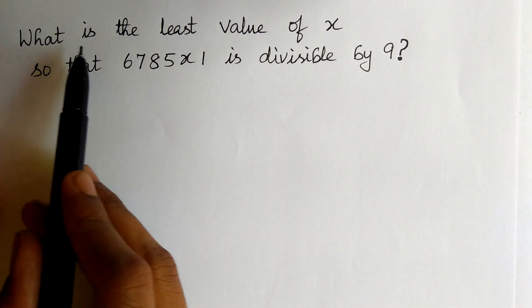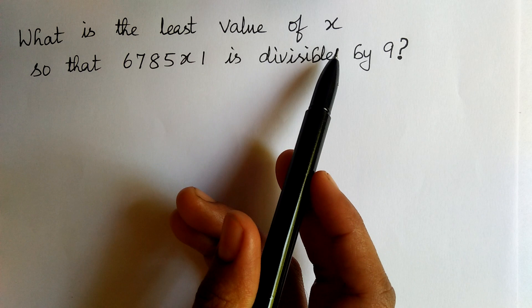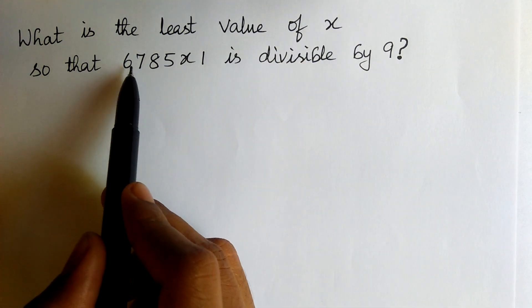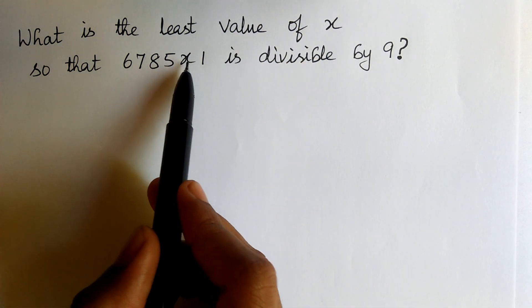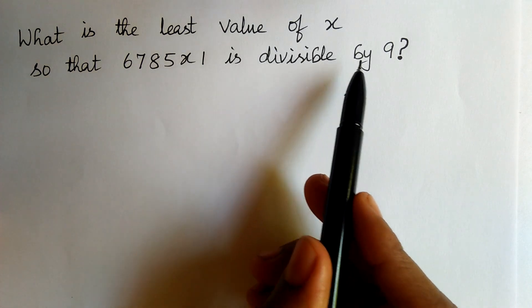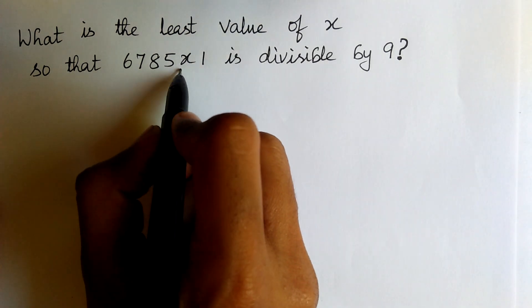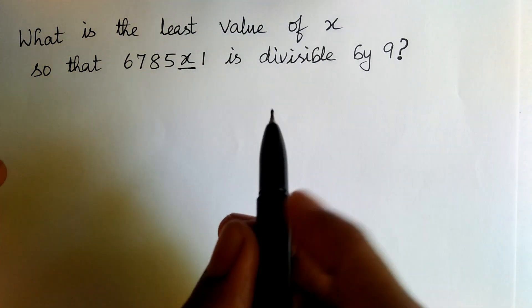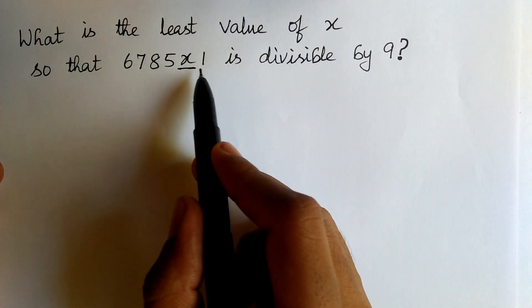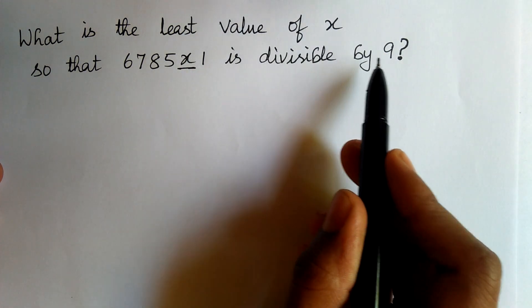The question is what is the least value of x so that 6785x1 is divisible by 9? We need to find the value of x. Here we can see that it should be divisible by 9.